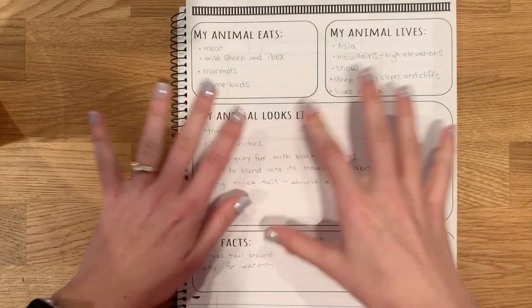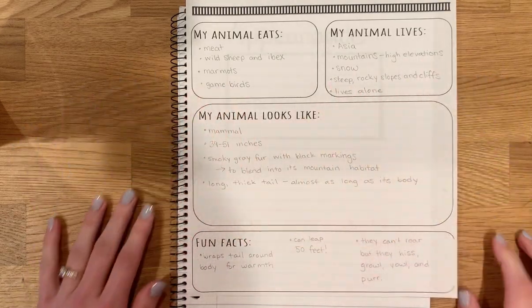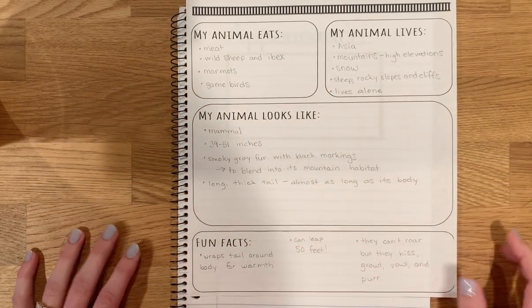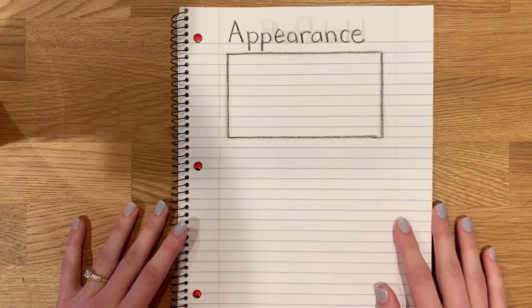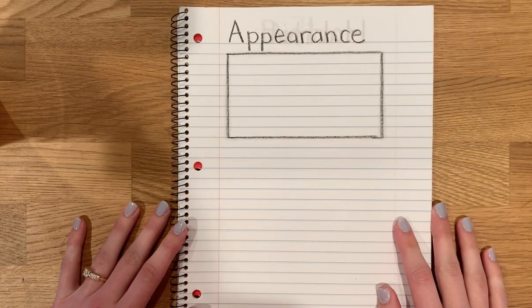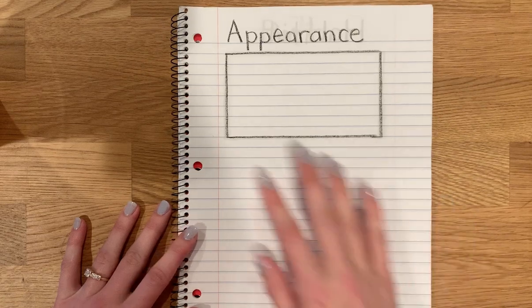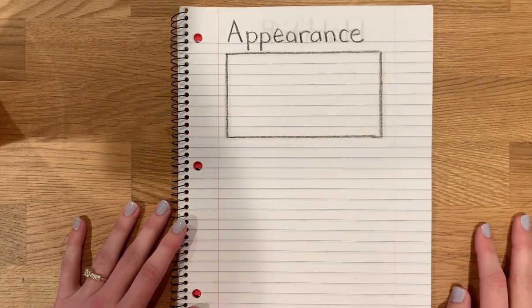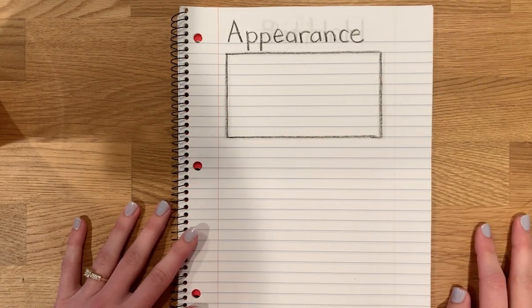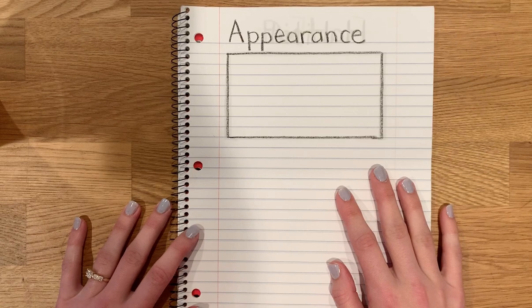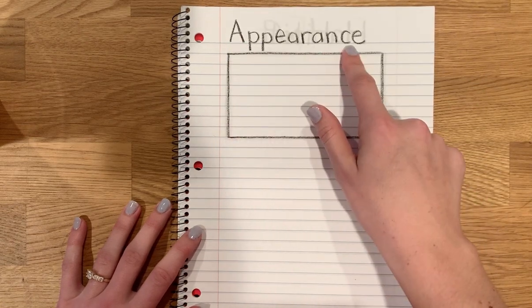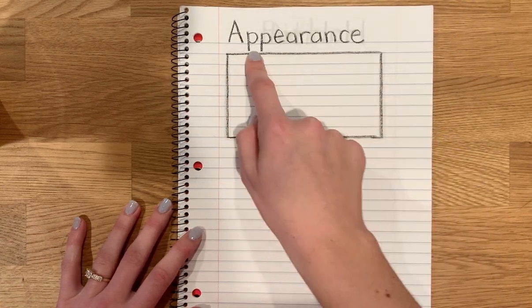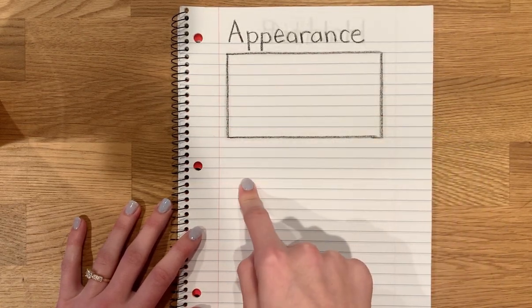So today we're going to turn this into the beginning of our writing. The first page we have is appearance. If you don't have a printer, you can make your own page that says appearance, like I did here. Take any piece of plain paper or notebook paper, write appearance at the top, draw a box for your picture, and you're ready to go.